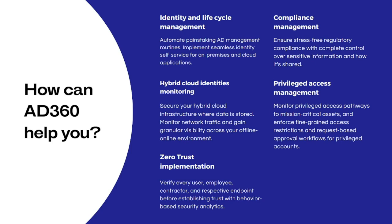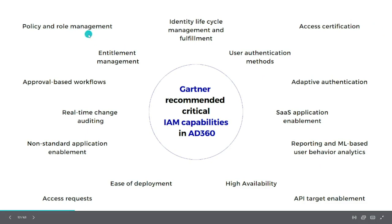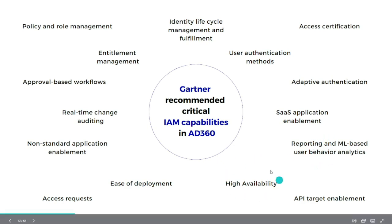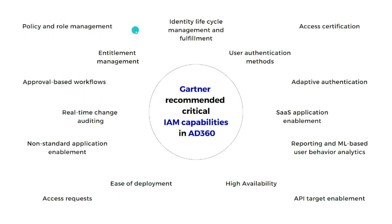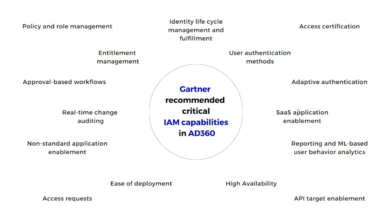There's also privileged access management — user behavior for privileged users, their accesses, what they have privileges to, how you can make it time-based with just-in-time and just-enough access. If I were to get more granular, I'd draw a parallel with what Gartner considers critical capabilities for any IAM solution. There are 15 capabilities, and hands down, 15 out of 15 we can solve: identity lifecycle management, user authentication, adaptive authentication, user behavior analytics, high availability, ease of deployment, real-time change auditing, approval-based workflows, policy and role management.